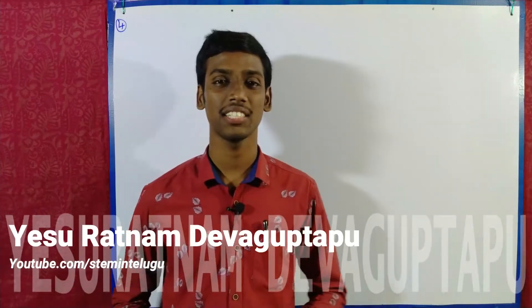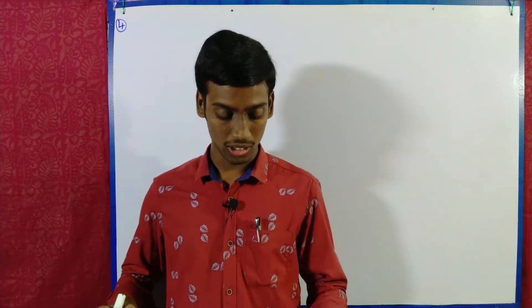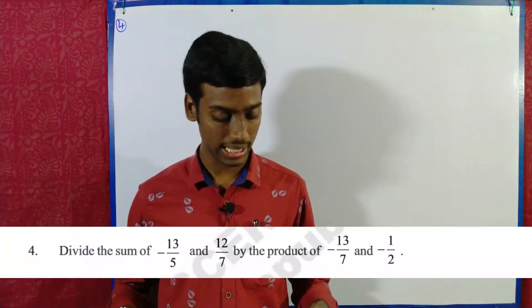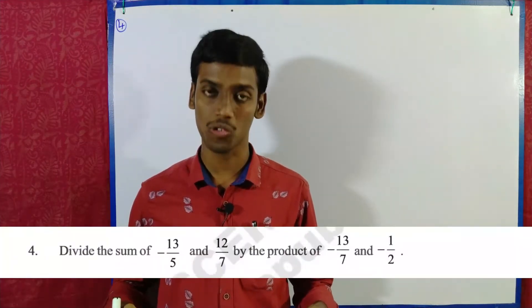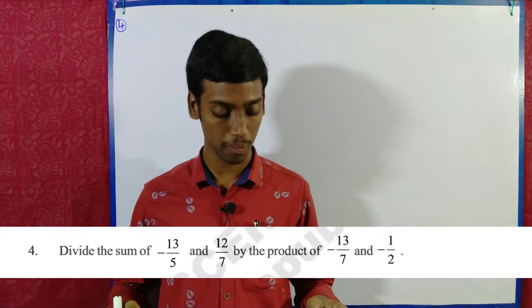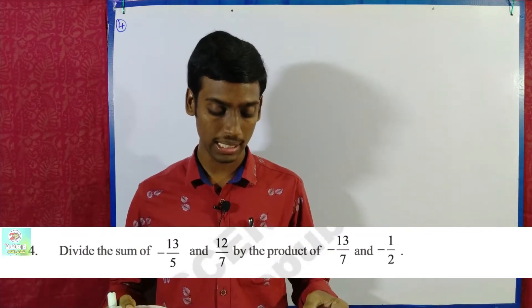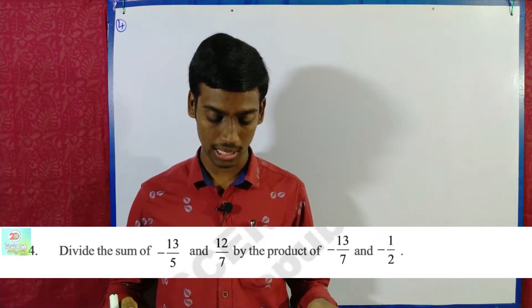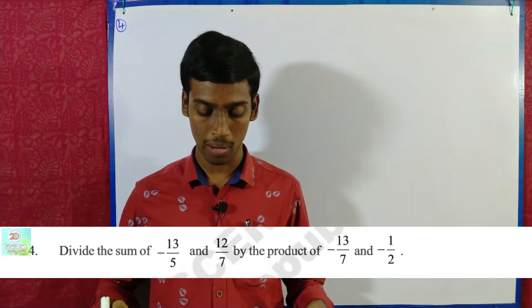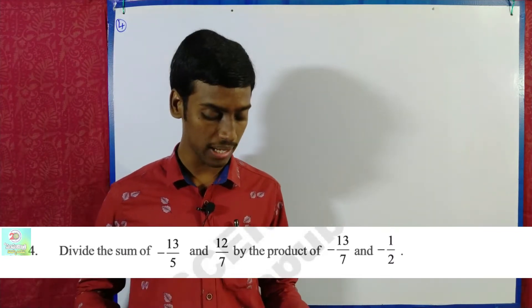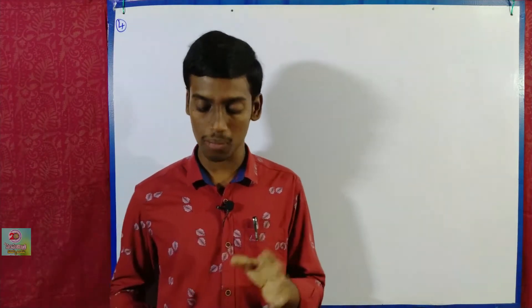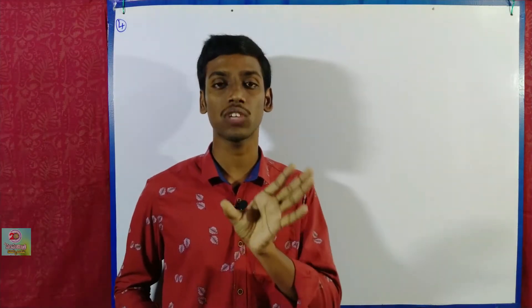Welcome students. This is a rational numbers problem in Telugu. In this video, I will show you the first sum: divide the sum of minus 13 by 5 and 12 by 7, by the product of minus 13 by 7 and minus 1 by 2. We have to do this sum as the first question.